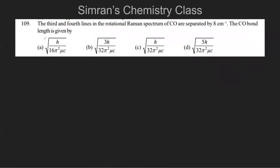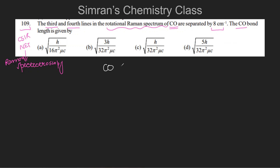Hi everyone, welcome to Samiran's Chemistry Class. Today we will study a question based on Raman spectroscopy. According to the question, the third and fourth lines in the rotational Raman spectrum of carbon monoxide are separated by 8 cm⁻¹. We are asked to find the CO bond length, represented as r.